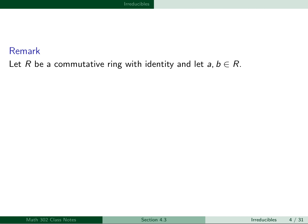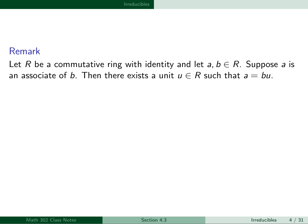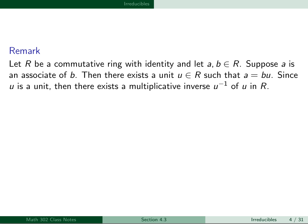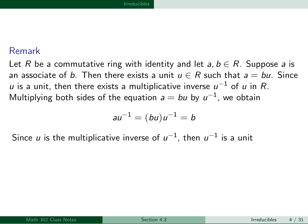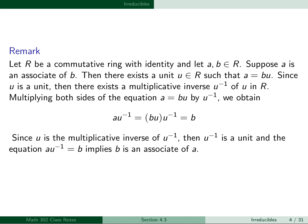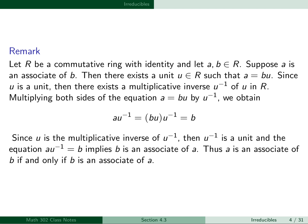As a property of associates, we have this first remark: let R be a commutative ring with identity, and let a and b be elements of R. Suppose that a is an associate of b. Then there exists a unit u in R such that a equals bu. Since u is a unit, there exists a multiplicative inverse u-inverse of u in R. We obtain a·u-inverse equals bu·u-inverse, which equals b. Since u is the multiplicative inverse of u-inverse, then u-inverse is also a unit, and the equation a·u-inverse equals b implies b is an associate of a.